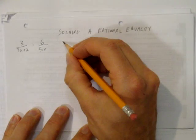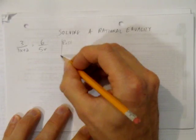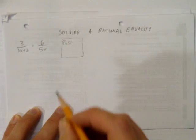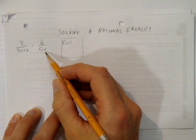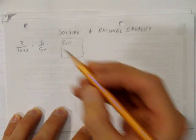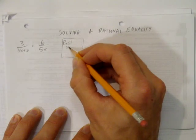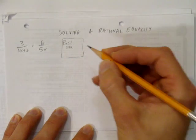The first thing we want to do is record our restrictions. That is, keep track of what x can't be. There's a denominator here of 5x. That's 5 times x. So what would make the denominator 0? Simply if x were 0. That's our first restriction. x cannot equal 0.